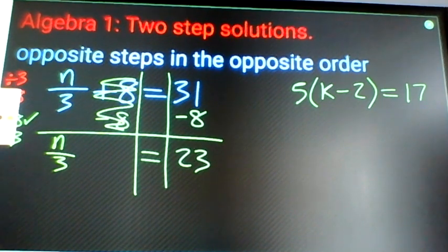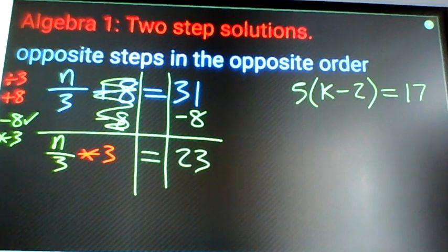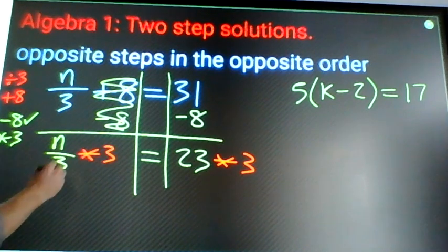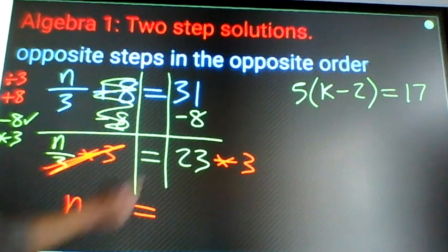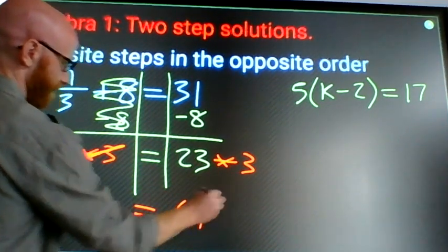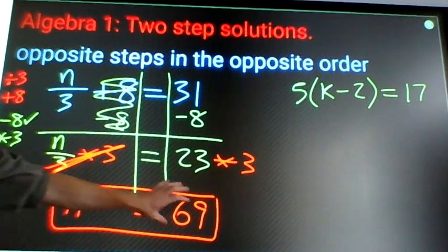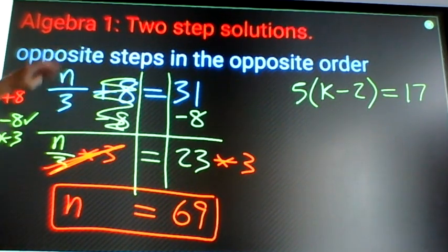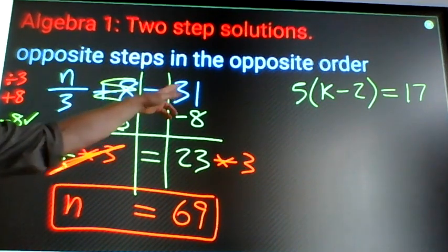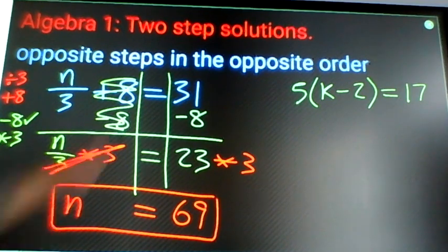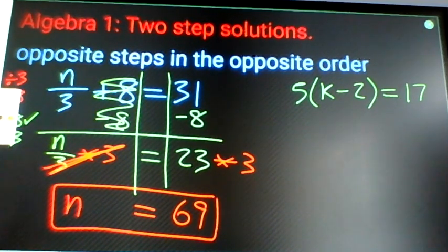Second step: undo divide by 3, so I'm going to multiply by 3 both sides. Times 3, divided by 3 cancel out, left with n equals 69. n equals 69. Now you can double check: take that, put it here, 69 divided by 3 plus 8, hit enter on a calculator, make sure it comes out as 31. If it does, all good. Let's look at the one on the right now.